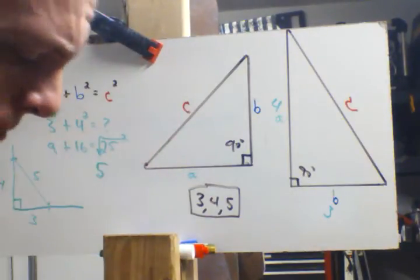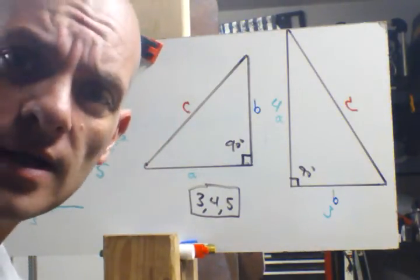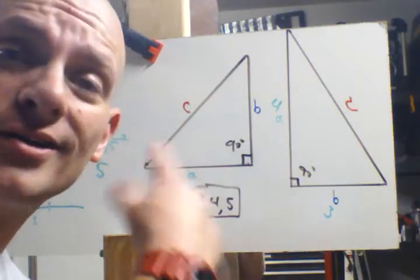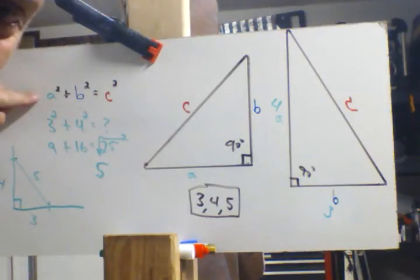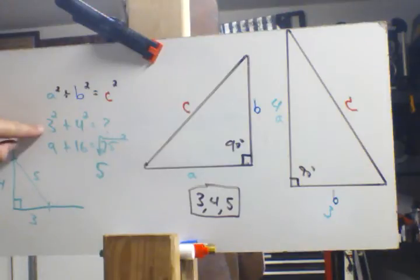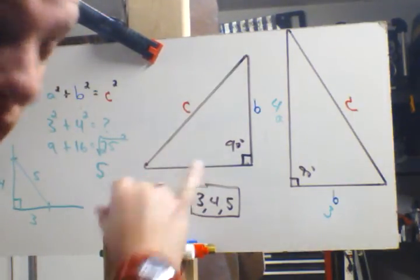So that is basically the Pythagorean theorem on how to do it, how it applies to woodworking. Again if you don't get this part over here, if you can't remember how to take the square root or how to square something, don't sweat it.